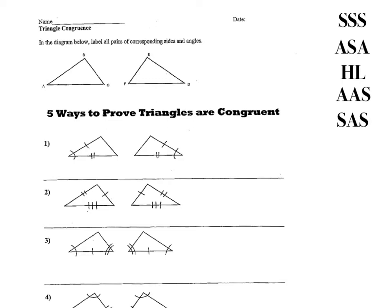The first one, SSS, stands for side, side, side. The second one, ASA, stands for angle, side, angle.